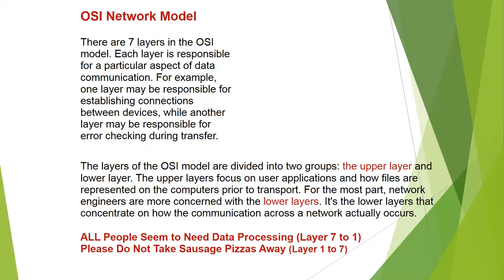It is the lower layers that concentrate on how communication across a network actually occurs. Two mnemonics are used to remember the layer names: 'All People Seem To Need Data Processing' for layers 7 to 1, and 'Please Do Not Take Sausages And Pizza Away' for layers 1 to 7.